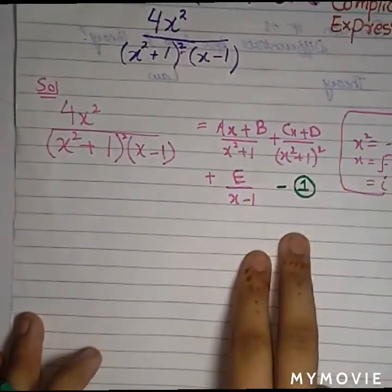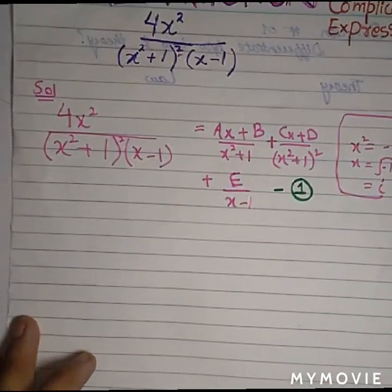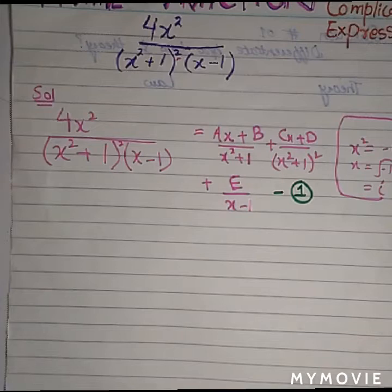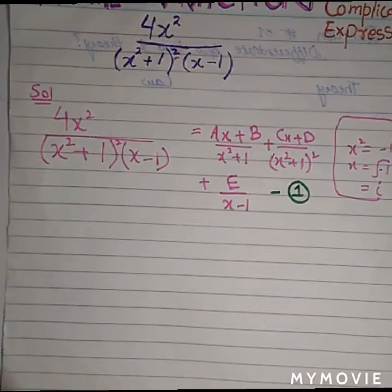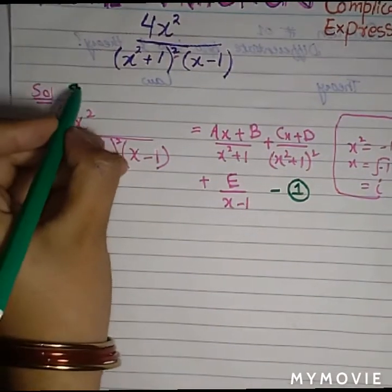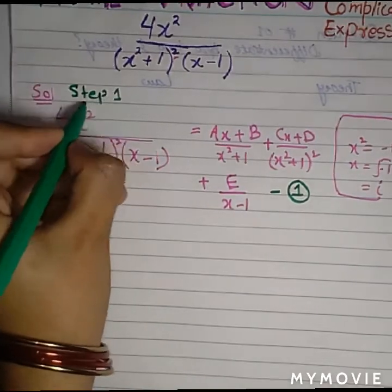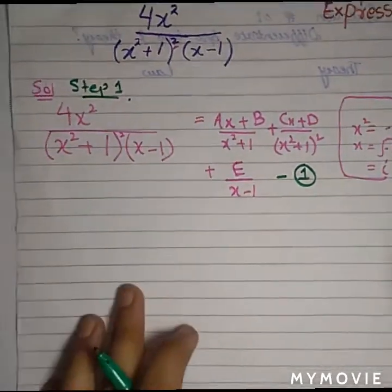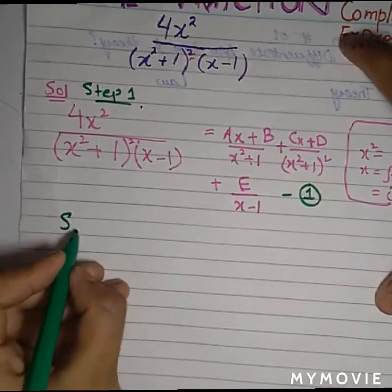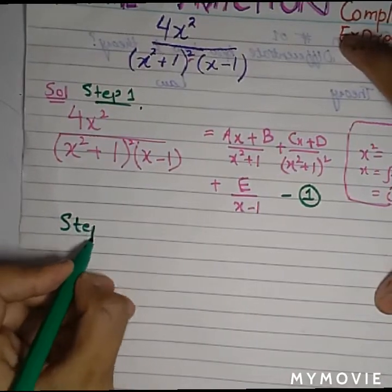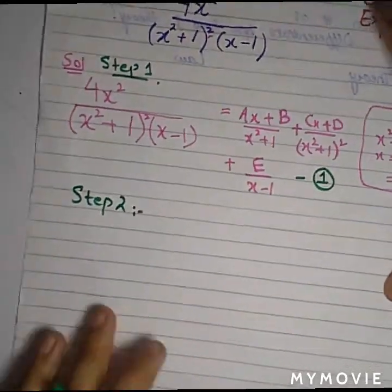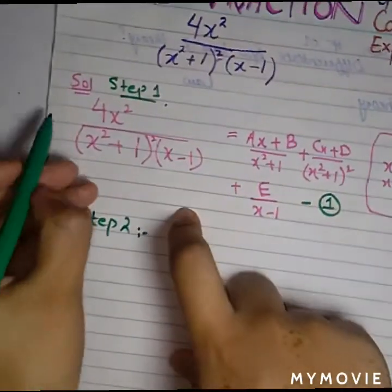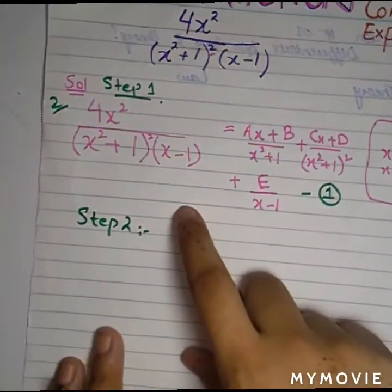First of all, you have to understand how to write the equation. Then other work is very easy and simple. Name the equation as equation 1, and name equations differently. Don't make the same name for all. Now step 1, the difficult step, is completed.